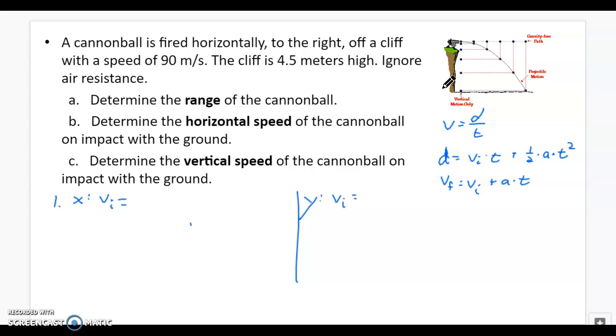Because the cannonball is fired horizontally to the right off the cliff at a speed of 90 meters per second, the cliff is 4.5 meters high, ignore air resistance. We have to solve for all this stuff, but it's horizontally at 90 meters per second. So the initial speed on the horizontal part X is 90 meters per second, but Y the initial speed is 0 meters per second because this is the vertical side. And it's not shot up or down at an angle.